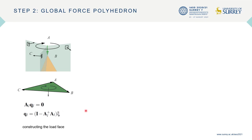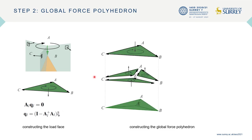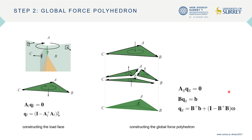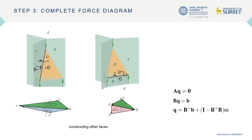Now that the load face is constructed, the topology of the reaction faces can be similarly obtained by traversing the spaces around each support edge. The reaction directions are unknown — for example, the correct cycle of face A, E, C is obtained by flipping the direction of its shared edge A, C with the load face and adjusting the other edge vectors accordingly. The edge lengths of the reaction faces are then calculated using another set of algebraic equations, keeping all four polygons closed and imposing the condition of keeping the previously calculated edge lengths of the load face, resulting in a flat force polygon. The topology and edge lengths of the other faces of the force diagram can be calculated similarly, resulting in a complete force diagram.